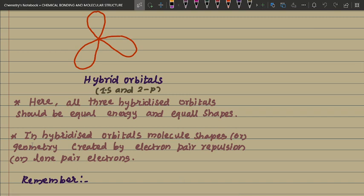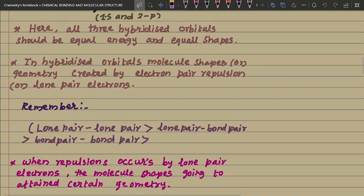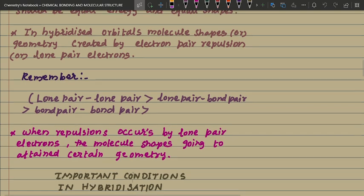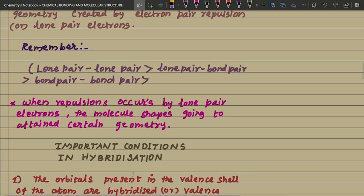Molecular shapes and geometry are created by electron pair repulsion or lone pair electrons. Remember this — we have already seen in previous videos: lone pair–lone pair repulsion is greater than lone pair–bond pair repulsion, which is greater than bond pair–bond pair repulsion. When repulsion occurs due to lone pair electrons, the molecule attains a certain geometry.